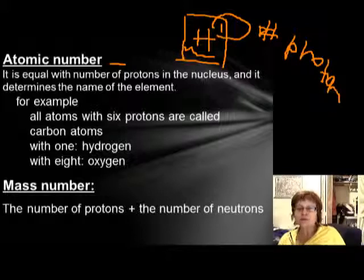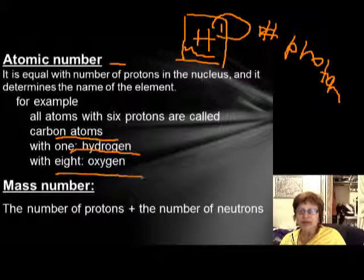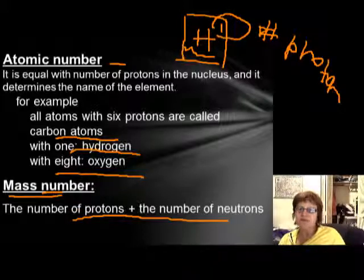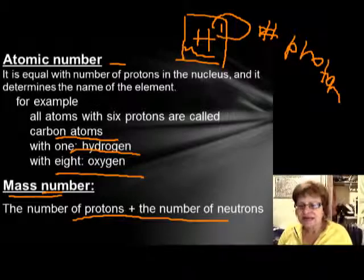So every element with one proton is called hydrogen, every element with six protons is called carbon, and every element with eight is called oxygen. The other thing to know is the mass number, which is the number of protons plus the number of neutrons together.